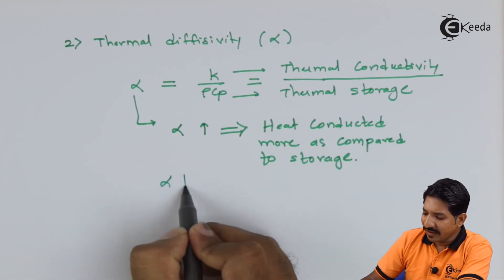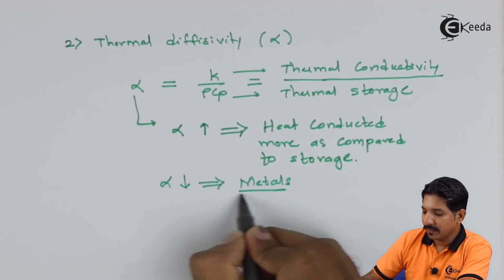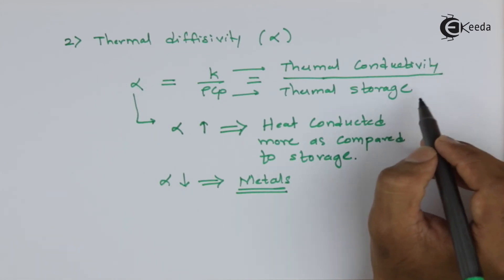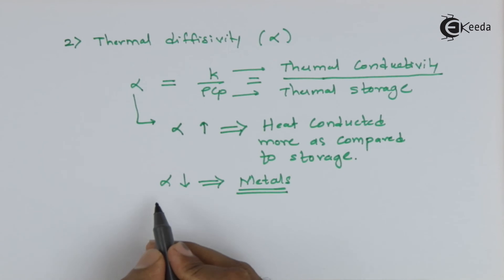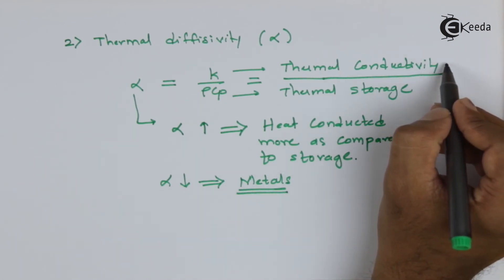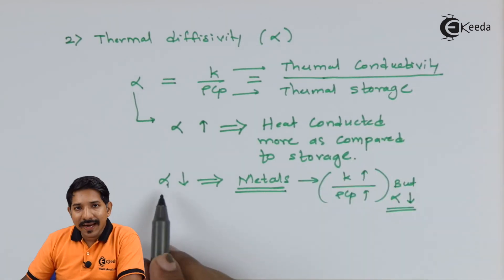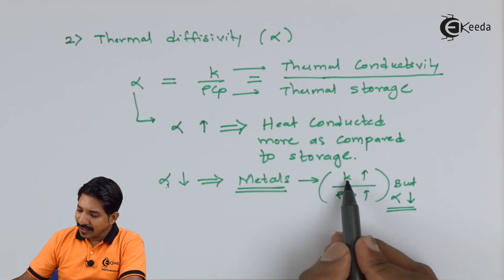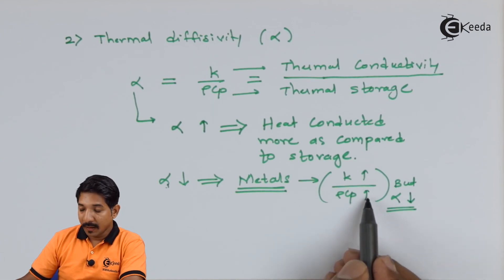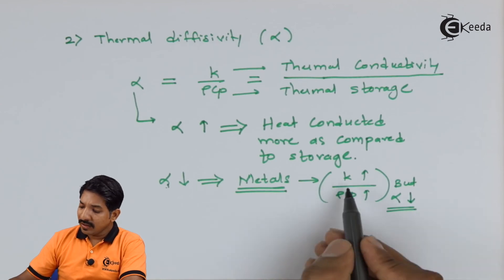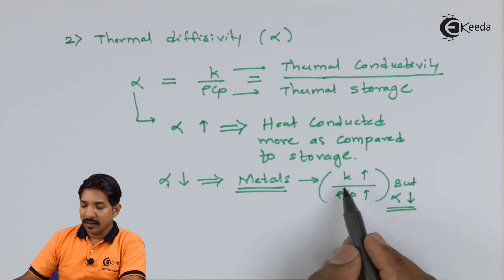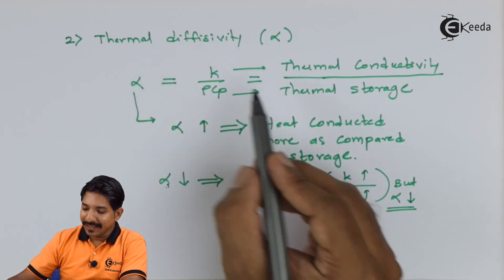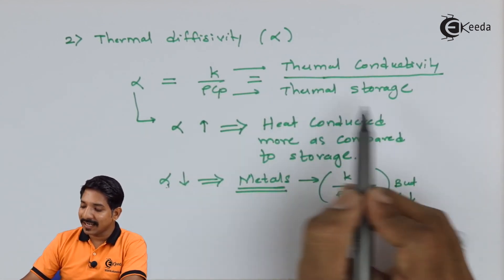If alpha is higher, more heat is conducted compared to what is stored. If alpha is lower, less heat is conducted relative to what is stored. For metals, even though thermal conductivity is high, the thermal storage capacity is also high — and the rate of increase of thermal storage is greater than the rate of increase of thermal conductivity, resulting in a relatively low thermal diffusivity. Thus, thermal diffusivity depends on both the rate of increase of thermal conductivity and the rate of increase of thermal storage.